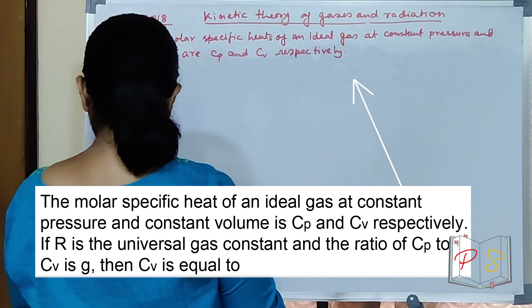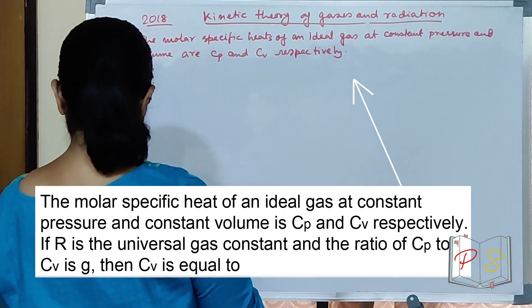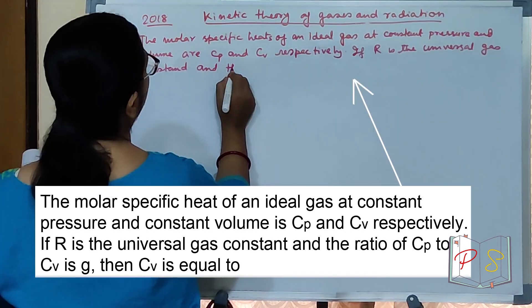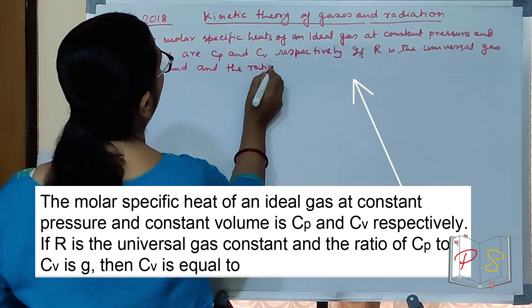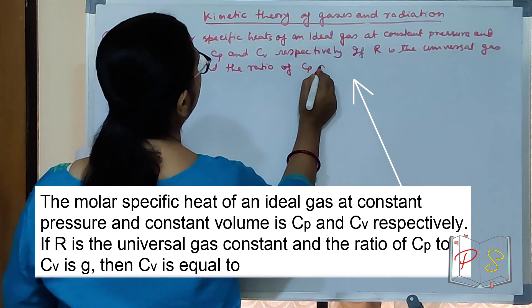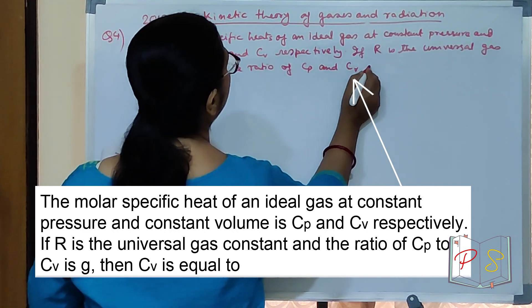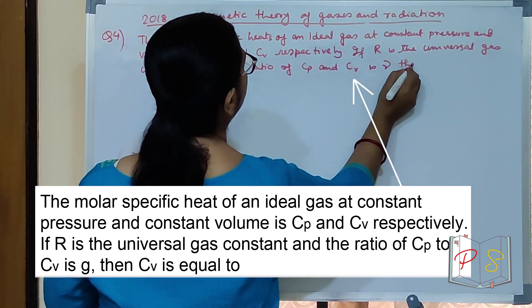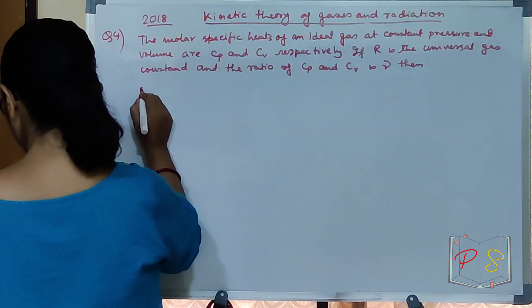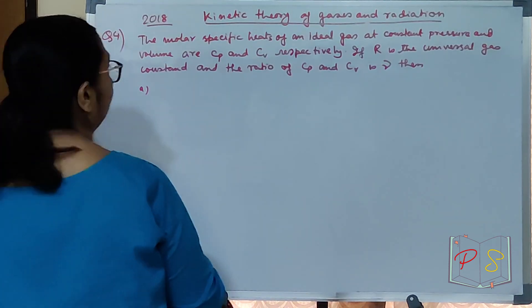If R is the universal gas constant, and the ratio of Cp to Cv is gamma, then Cv is equal to...